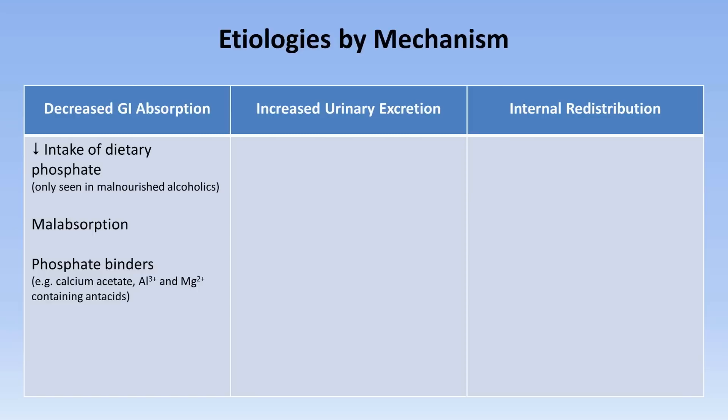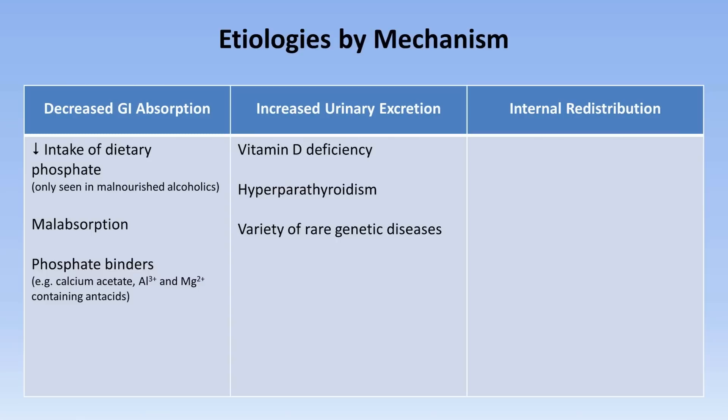In the category of increased urinary excretion of phosphate, we have vitamin D deficiency and hyperparathyroidism. There are also a variety of rare genetic diseases resulting in various forms of hypophosphatemic rickets, which can be caused by mutations in the FGF23 gene, rendering the FGF23 protein more resistant to proteolytic cleavage and thus increasing its overall activity.